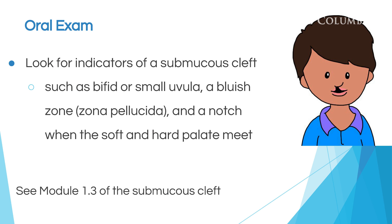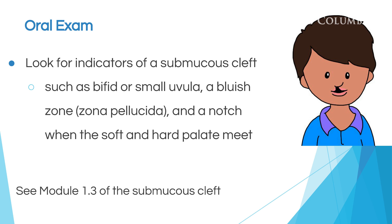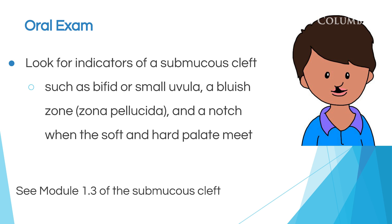When looking at the child's mouth, you'll also want to look for indicators of a submucous cleft. Check to see if there's a bifid or small uvula — that would be a uvula that's split in half or just tiny. Also, look in the mouth to see if there's a bluish tone. If you shine a light to the roof of their mouth and see a bluish tone, that might be the zona pellucida, which is also an indicator of submucous cleft. With your pinky, if you touch the roof of their mouth and feel a notch, that notch between the hard and soft palate may also be an indicator of a submucous cleft.